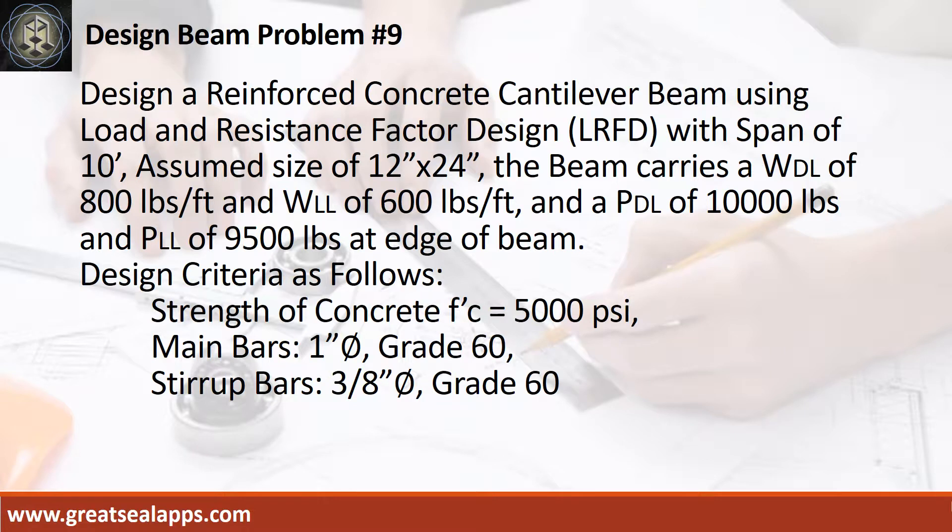Design a reinforced concrete cantilever beam using load and resistance factor design with span of 10 feet, assumed size of 12 inches by 24 inches. The beam carries a uniform dead load of 800 pounds per foot and uniform live load of 600 pounds per foot. Design criteria as follows: strength of concrete 5,000 PSI.